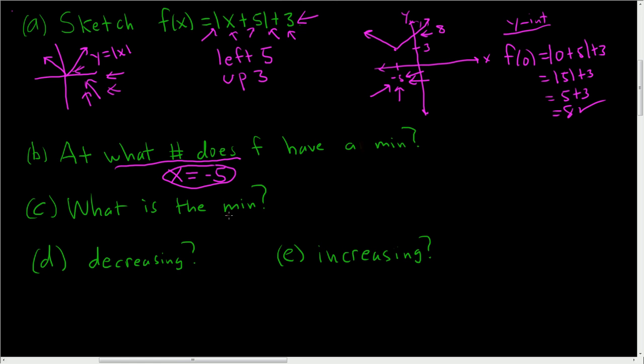When it asks you what the minimum is, it wants the Y-value. So what's the smallest Y-value? The smallest Y-value is 3. So the answer here is Y equals 3. When it says at what number does it have a min, where does it happen, we answer in terms of X's. If it's asking for the min, we just use the Y.